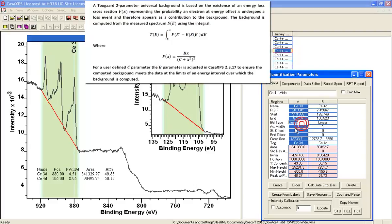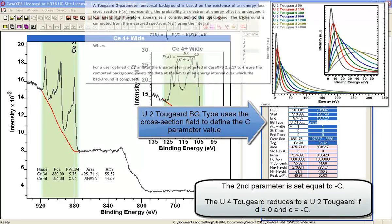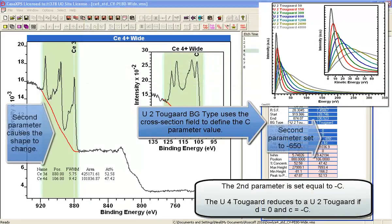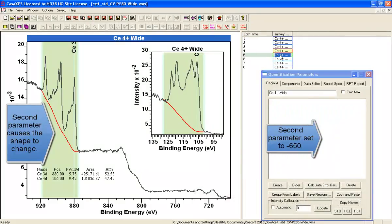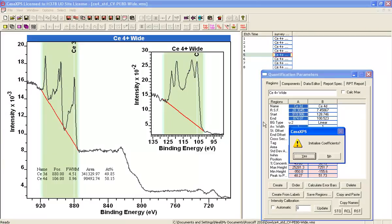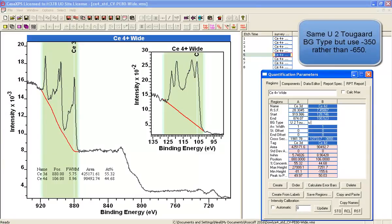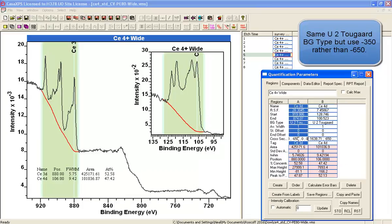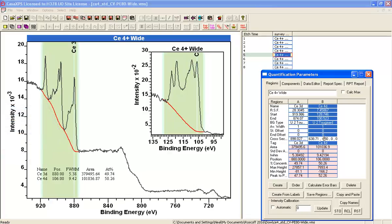Go back to the linear, and then we'll enter a U2 Tougaard background, and we'll use a slightly different value in the U2. They produce different cross-sections depending on the value for the second parameter, and we'll do another one with a slightly different parameter. This one is going to be minus 350, and the result of that will be, as you can see, that the background sits closer to the data.